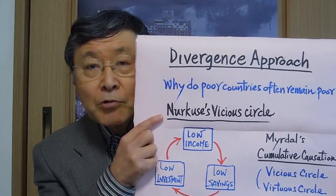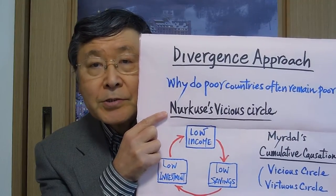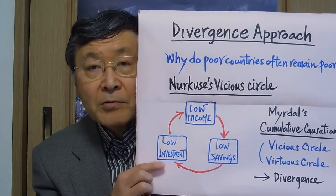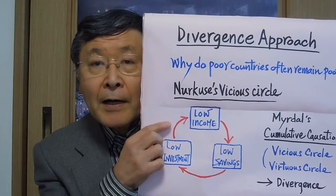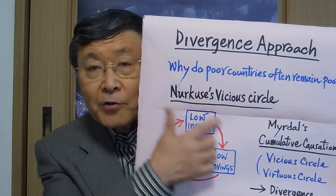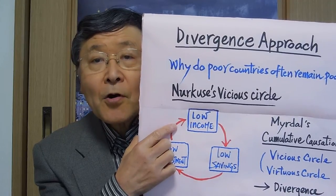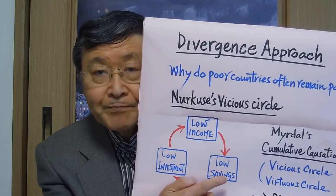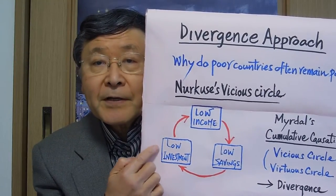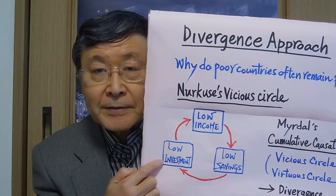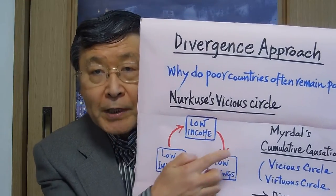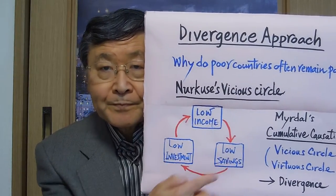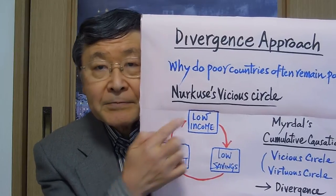The classic approach to this question is Nurkse's vicious circle of poverty, which goes as follows. In a poor country, people have very low income, and so they have very little savings, which would result in very low investment and reproduce the low-income situation. So this is a vicious circle reinforcing itself — it is very difficult to get out of.